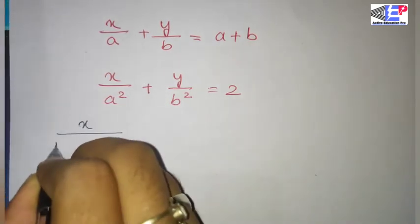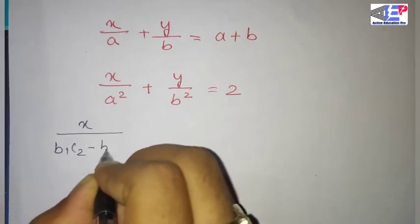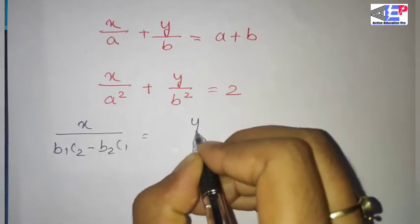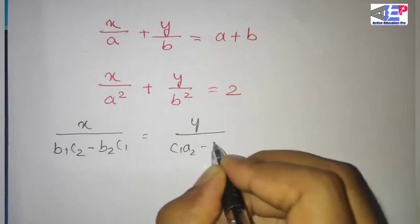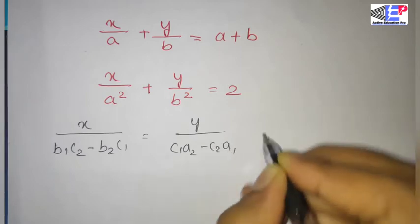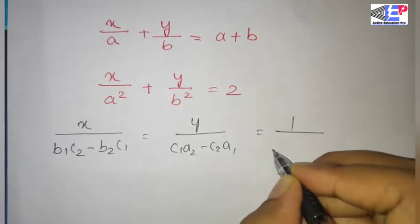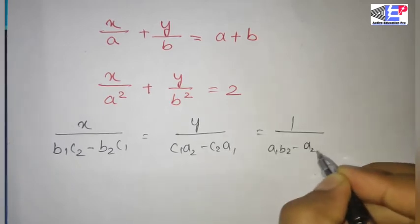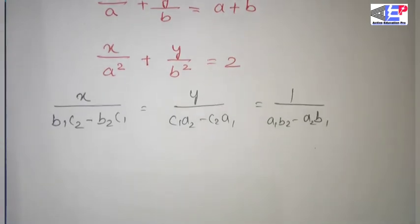X by B1C2 minus B2C1 is equal to Y by C1A2 minus C2A1 is equal to 1 by A1B2 minus A2B1. I will explain this as much as possible.